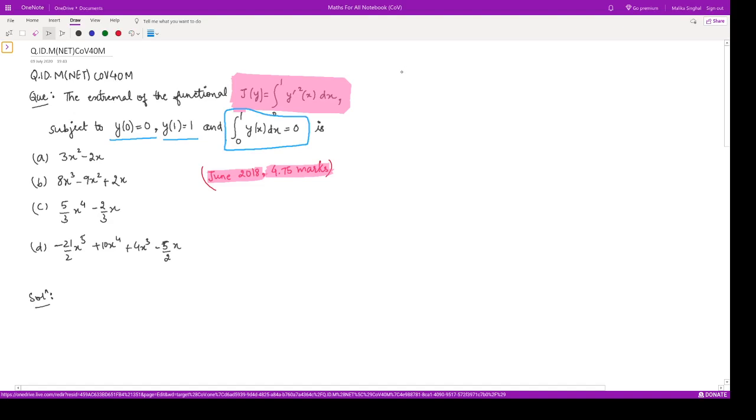So it is a variational problem with subsidiary conditions—one extra condition is given. Let us solve this question. To solve this question, we need to find the solution to the following Euler-Lagrange equation.